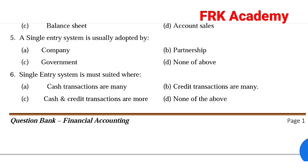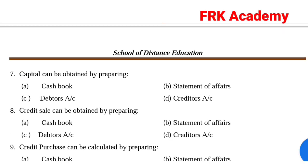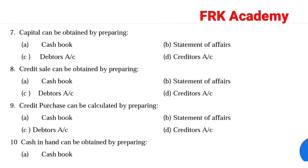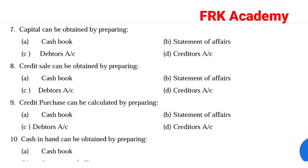Question: In single entry system, closing capital is ascertained by preparing. Option A: cash book. Option B: statement of affairs. Option C: debtors account. Option D: creditors account. Answer: Option B, statement of affairs. Credit sales can be obtained by preparing. Answer: Option C, creditors account.